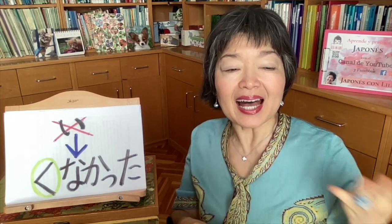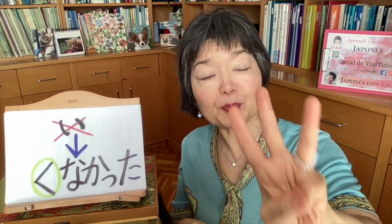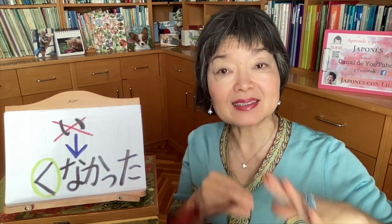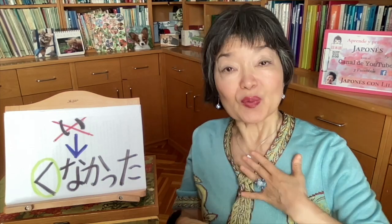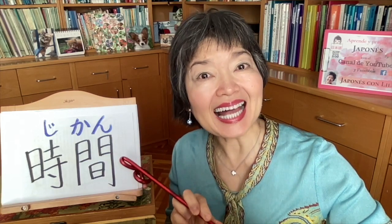Very importantly, we use ほしいです for 'I' or 'you.' For example: 何が ほしいですか (nani ga hoshii desu ka) — 'What do you want?' But we do NOT use ほしいです for a third person, like 'my father,' 'he,' or 'she.' In that case we use a different form, but that's more advanced, so don't worry about it now.